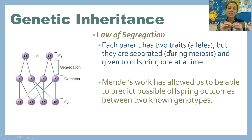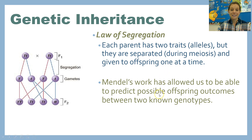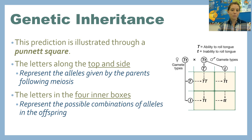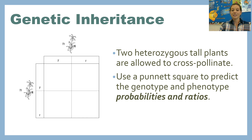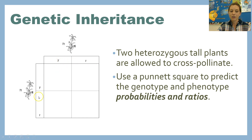The law of segregation says alleles are separated from one another during meiosis and given to offspring one at a time. This allows us to predict possible offspring outcomes between two known genotypes, which we illustrate using a Punnett square. The letters along the top and side of a Punnett square represent the alleles given by the parents following meiosis. The letters in the four inner boxes represent the possible allele combinations in the offspring, letting you predict genotypes and phenotypes. For example: two heterozygous tall plants, genotype Tt, are allowed to cross-pollinate — go ahead and fill in that Punnett square.